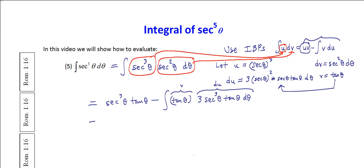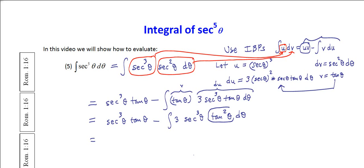So we get secant cubed theta times tangent of theta minus the integral of 3 times secant cubed theta times tangent squared theta d theta. As we've done twice before, tangent squared theta equals secant squared theta minus 1, by trig identity.